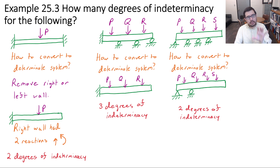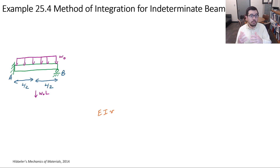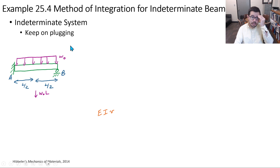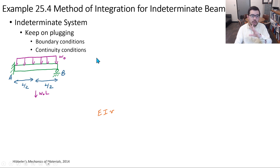Now that we've determined the degrees of indeterminacy, how do we solve for these unknown reactions? We have a couple of different tools. One is the method of integration, which is what we've been doing, but now with an unknown reaction included. We can also use superposition. The key idea is: keep on plugging — use boundary conditions and continuity conditions to attempt to solve for one or more unknown reactions.